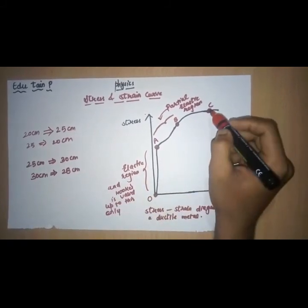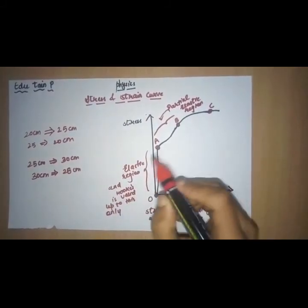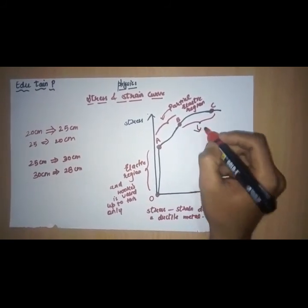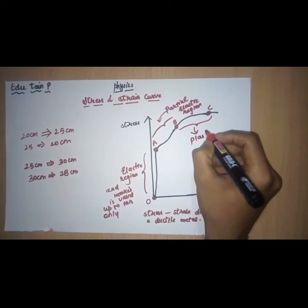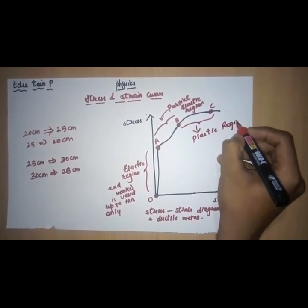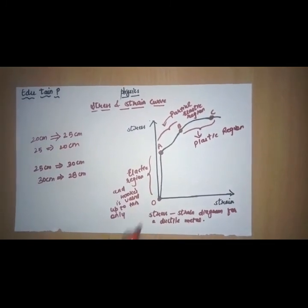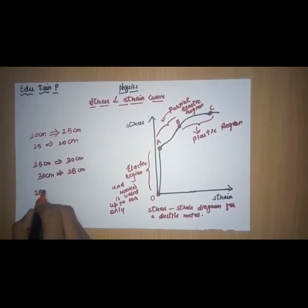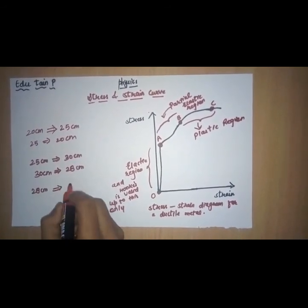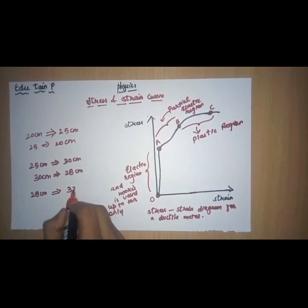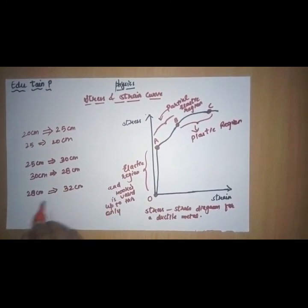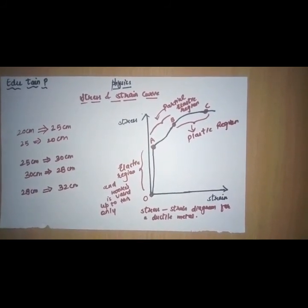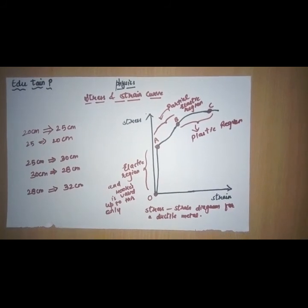Now, consider the point B to C. The region from B to C is known as plastic region. What plastic region? What do you understand by plastic region? Suppose, you stretch a wire of 28 cm to 32 cm. Now, the wire does not regain its original length. It stays up to 32 cm. The elongation will continue.